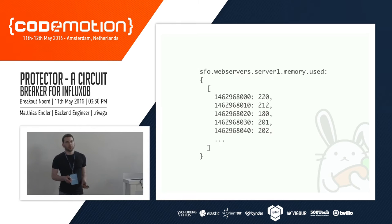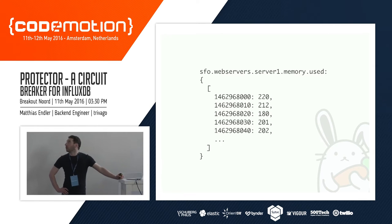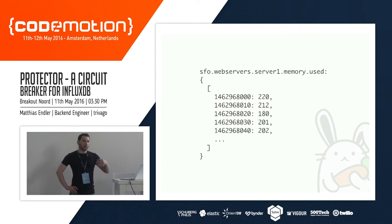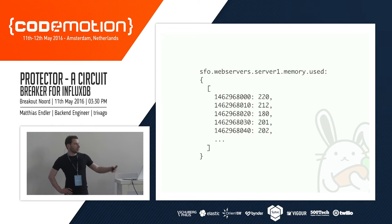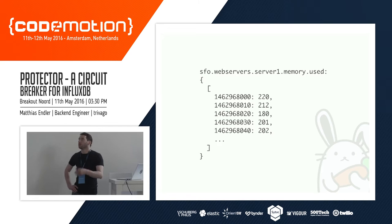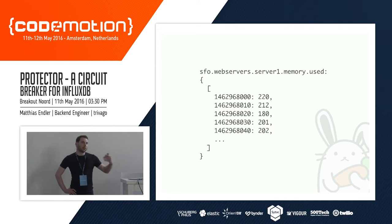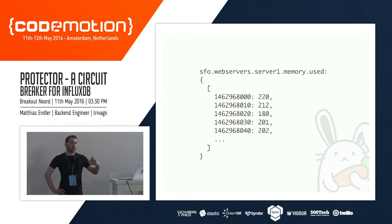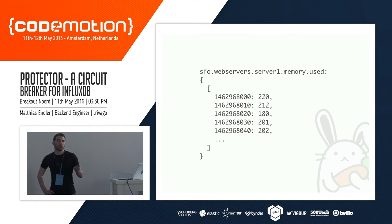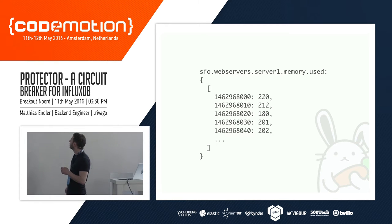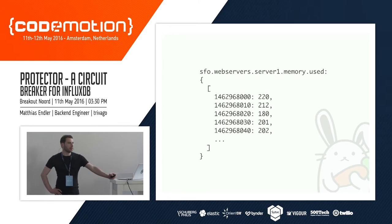You have a format like this — an identifier in a kind of namespace. For example, SFO is your data center, then all the web servers, then server one, measuring the memory usage. This metric name always stays the same — it's one fixed metric. You calculate the memory usage on a 10-second interval: for this UNIX timestamp you get 220 megabytes of RAM used, then 212 in the next 10 seconds, and so on. You do that over and over again, you get graphs, and that's how monitoring works.